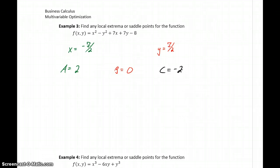So again, we want to find any local extrema or saddle points for the function. We'll start off by considering ac minus b squared, which in this case will be 2 times negative 2 minus 0 squared will give us negative 4, which is something less than 0. So we end up with a negative result.